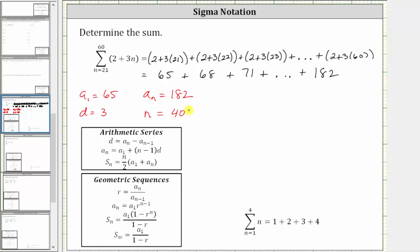And now we have all the information we need in order to determine the sum of the arithmetic series using the formula S sub n equals n divided by two times the quantity a sub one plus a sub n.